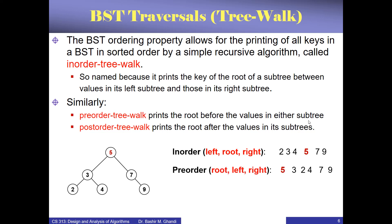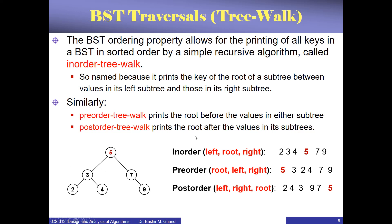For pre-order, you always print the key first — so 5 is the first to print before processing left and then right. For post-order, you must finish both left and right before printing the key 5.